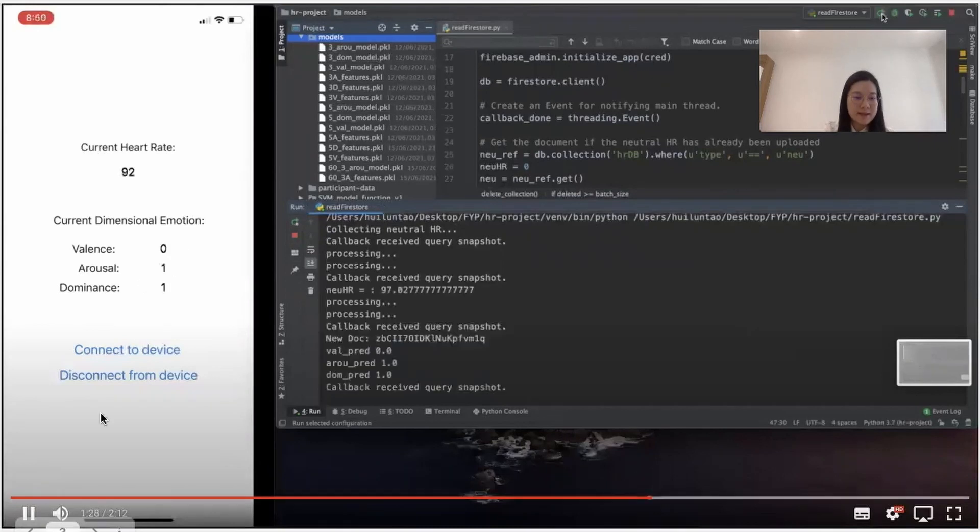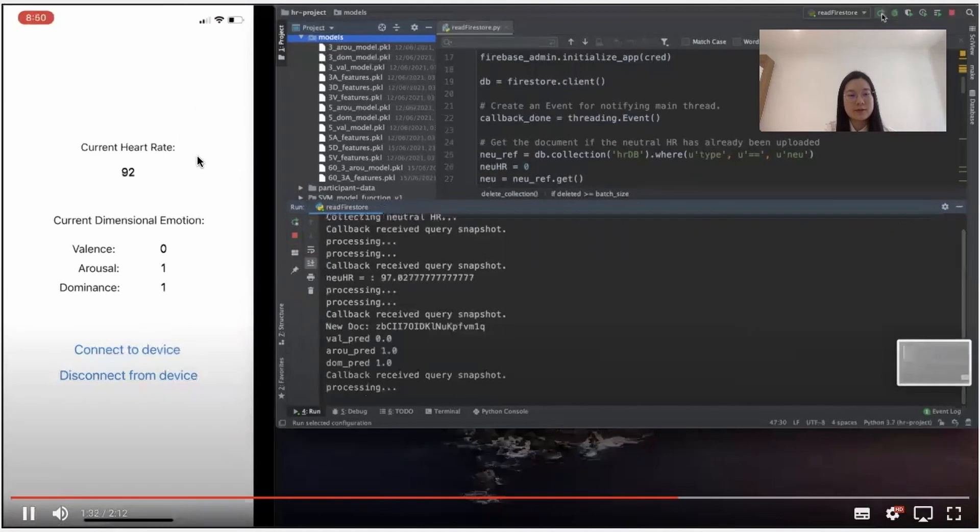So as you can see, it contains three sections: the current heart rate that shows the live reading of my heart rate data, the current dimension rating of what's predicted and returned from the model, and the two buttons to control whether to connect to the device or not.